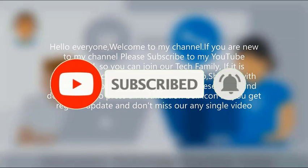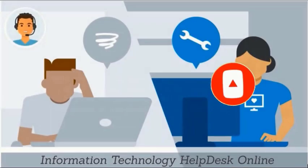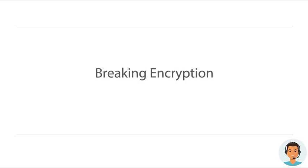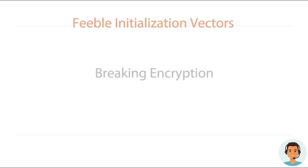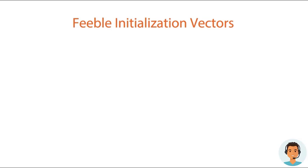So if things are encrypted, how do we break that encryption? Well, that's going to depend on the type of encryption that you're using. When it comes to WEP, one of the biggest issues that we have is the feeble initialization vectors that are out there, or IVs.